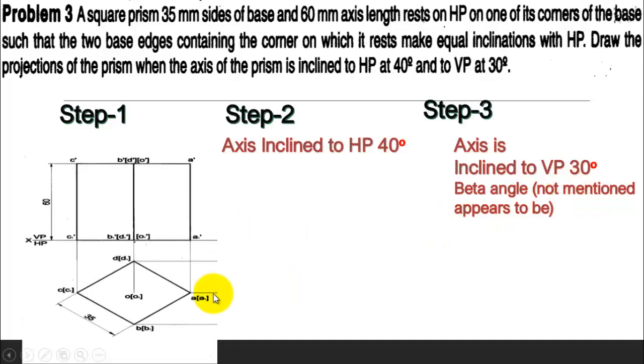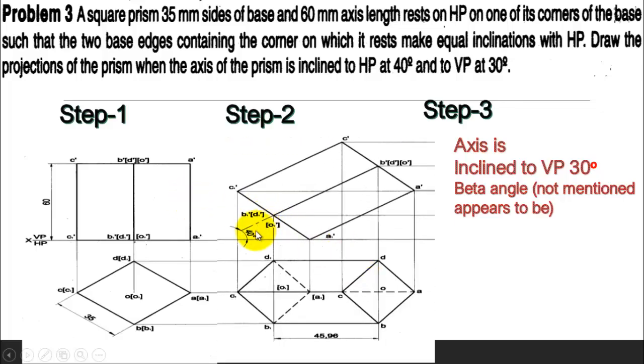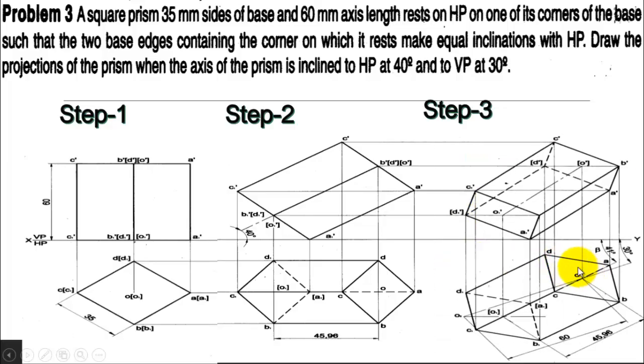Coming to the solution: Step 1, we take the corner condition and get the front view. Step 2, we make the axis inclination 40 degrees. Step 3, we find the beta angle, place the axis on that beta angle, and get the final front view.